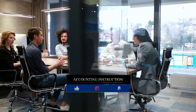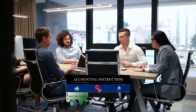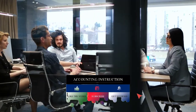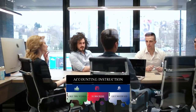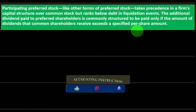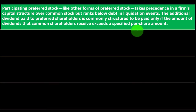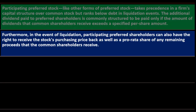So if the company went out of business, preferred stockholders get paid before common stockholders, although bondholders still have preference over preferred stockholders. The additional dividend paid to preferred shareholders is commonly structured to be paid only if the amount of dividends that common shareholders receive exceeds a specified per-share amount. Furthermore, in the event of liquidation, participating preferred shareholders can also have the right to receive the stock's purchase price back as well as a pro rata share of any remaining proceeds that the common shareholder receives.